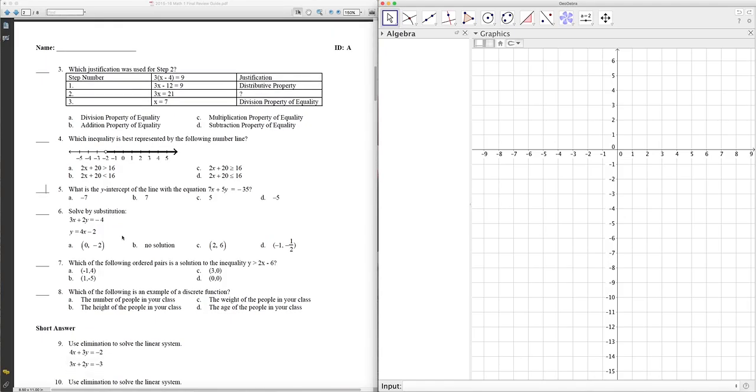Solved by substitution. What do I do here? Well, solved by substitution. It says 3x plus 2y equals negative 4 and y equals 4x minus 2. Hmm. Why don't we graph it? See what happens. Oh, let's do it. 3x plus 2y equals negative 4. Enter. And the other one is y equals 4x minus 2.